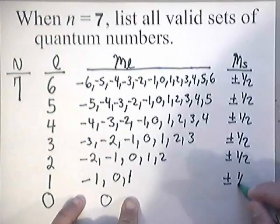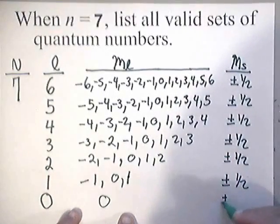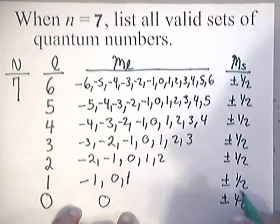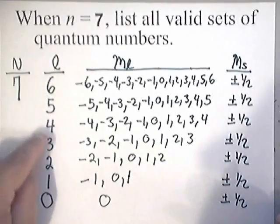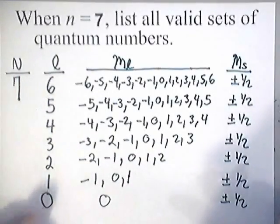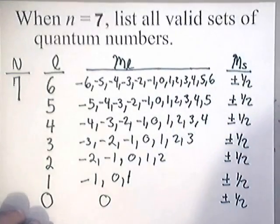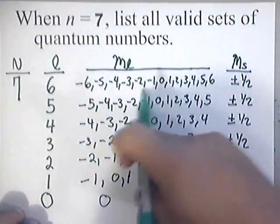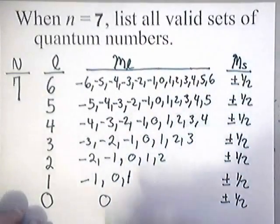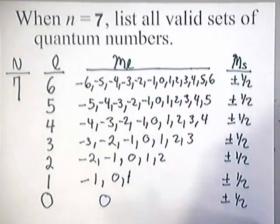So just make sure you don't make any errors writing this chart down. So notice that there's 1, 2, 3, 4, 5, 6, 7 orbital quantum numbers, and there's 1, 2, 3, 4, 5, 6, 7 spin numbers, and there's 1, 2, 3, 4, 5, 6, 7 rows of magnetic quantum numbers.